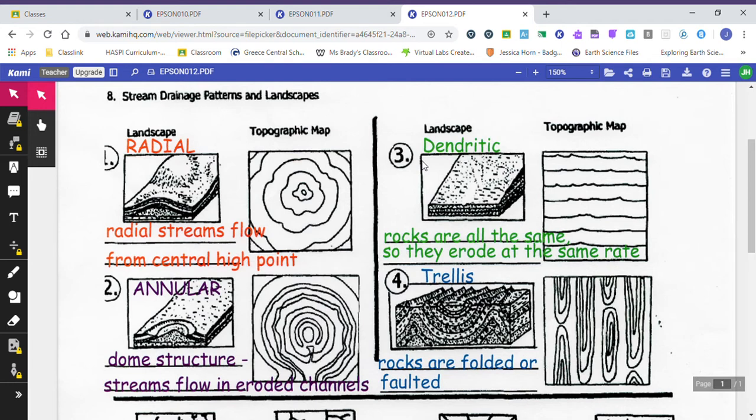The first one is called a radial landscape. When you look at a topographic map, you know it's a radial landscape because all these contour lines are all closed on each other and they're getting smaller and smaller and smaller, which is showing this is the top of a mountain. For a radial landscape, all of that water is going to flow from the high elevation down. It's going to flow from the central point and then flow down that mountain.